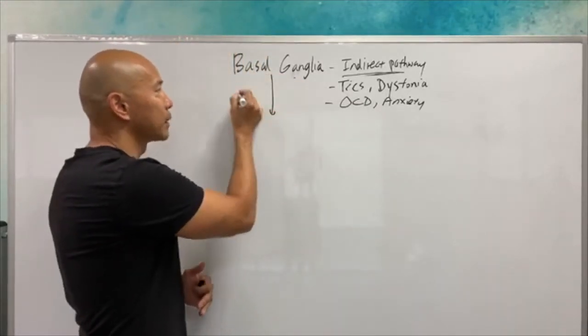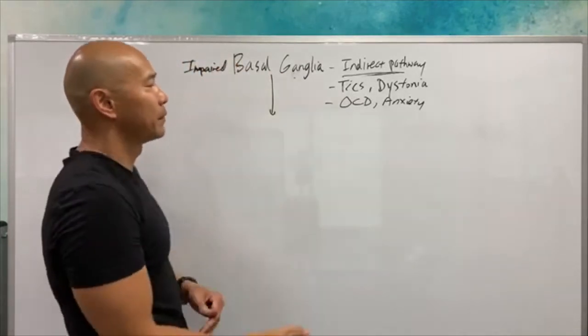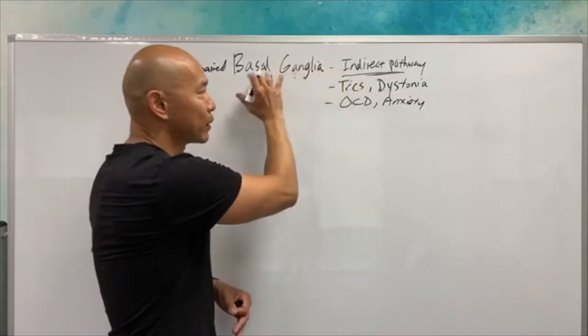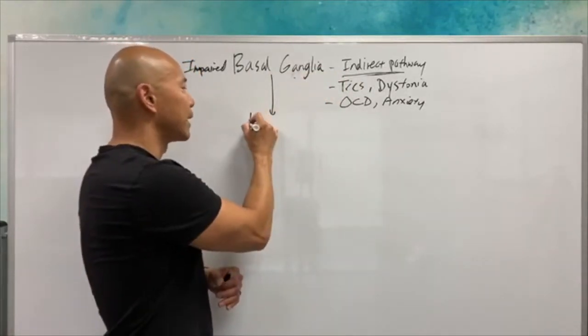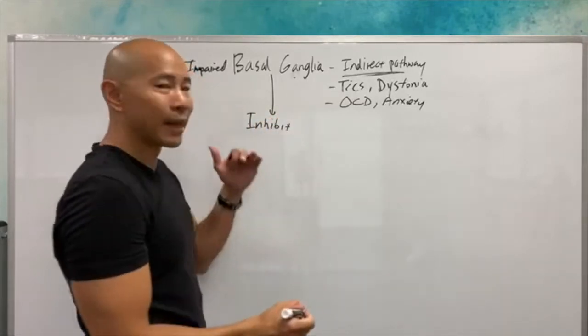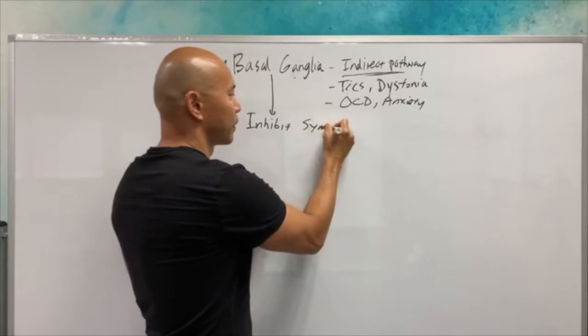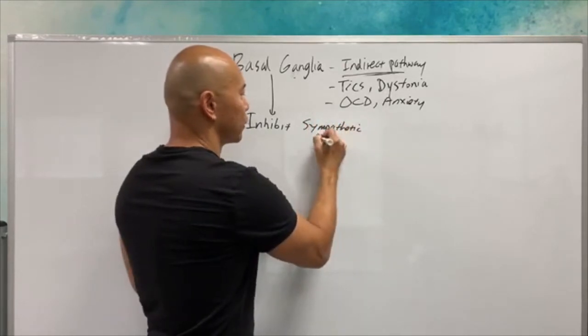If you have impairment, impaired basal ganglia, what happens is this basal ganglia, its main purpose is to inhibit. So it inhibits the sympathetic response, sympathetic nervous system.